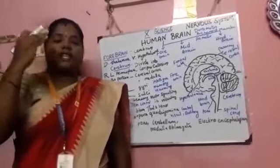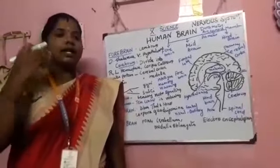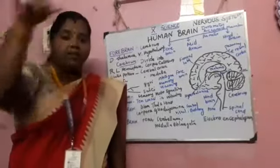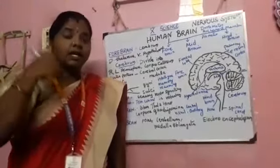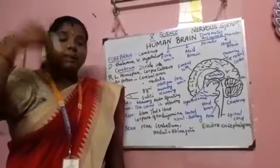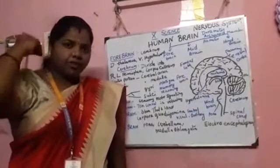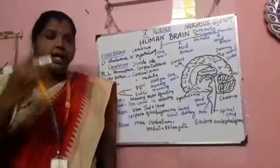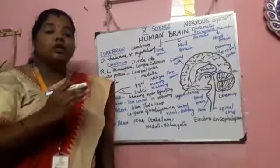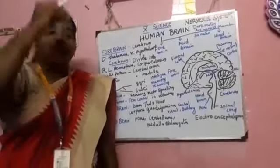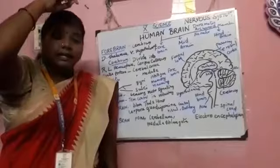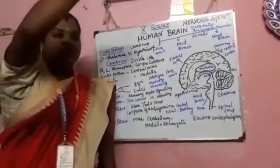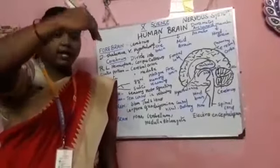First thing, from the sensory organ like eyes, ears — from the environment, the sensory organ receives some kind of noise or some kind of stimulus. It has been received, then it has been sent to the neuron at the dendrite, because dendrite is present at the surface of the neuron. So it has been received by the dendrite.